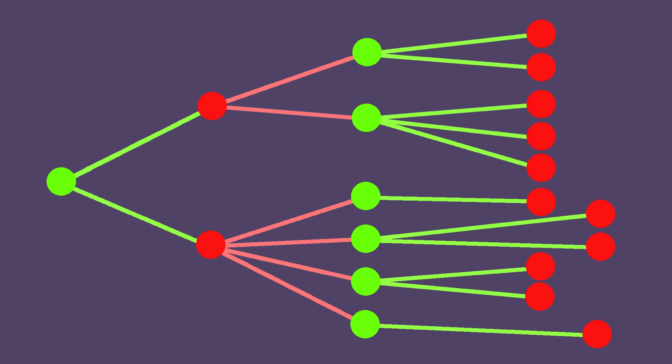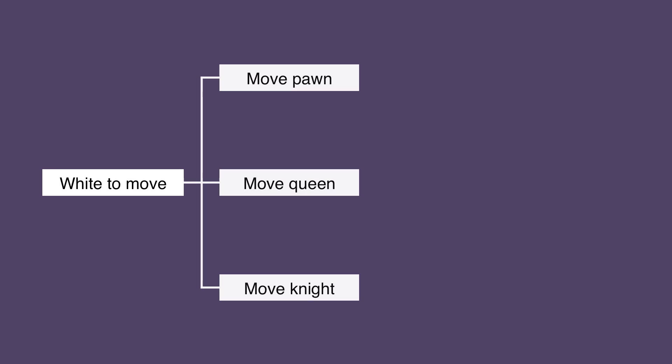Let's look at a decision tree involving a game of chess. It's White's move, and he has three options: he can move his Pawn, his Queen, or his Knight.